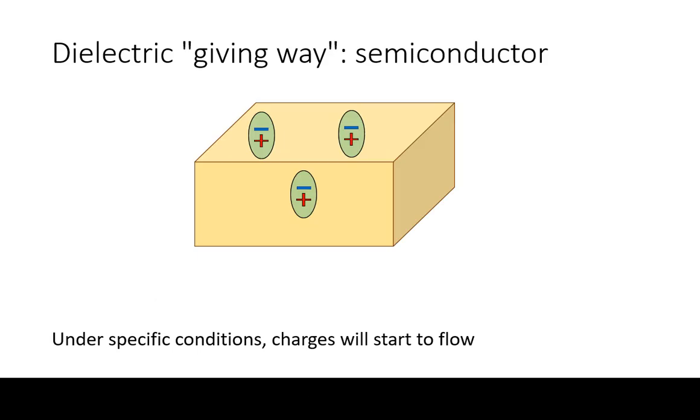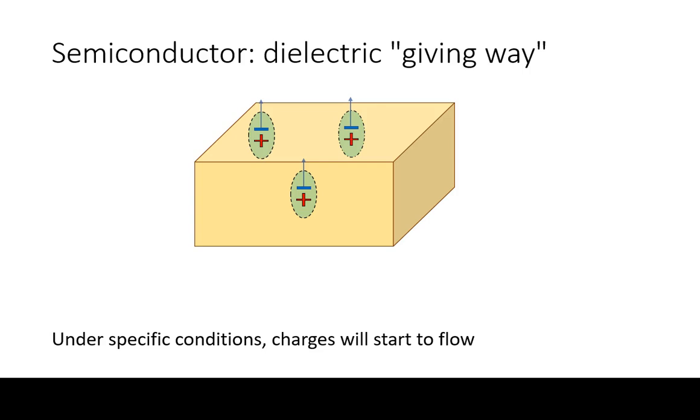As a side note, many people are confused about the difference between dielectrics and semiconductors. The property of dielectrics to polarize but insulate against charge flow has a limit. Beyond certain conditions, this insulation is going to break down and the charges will start to flow. From that point forward, we treat this material as if it was a conductor.